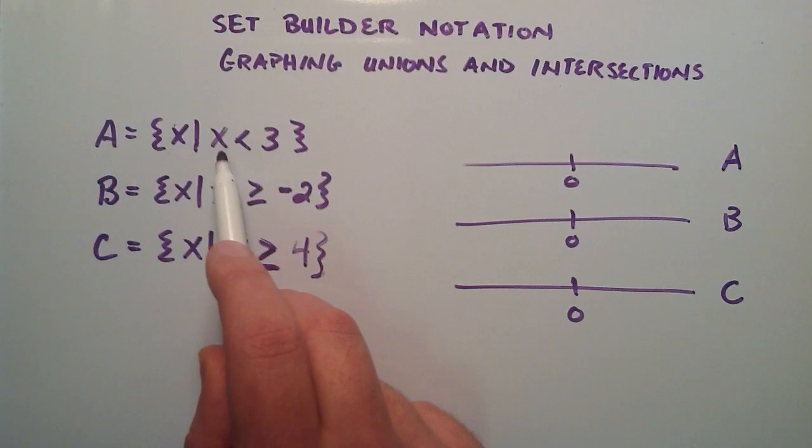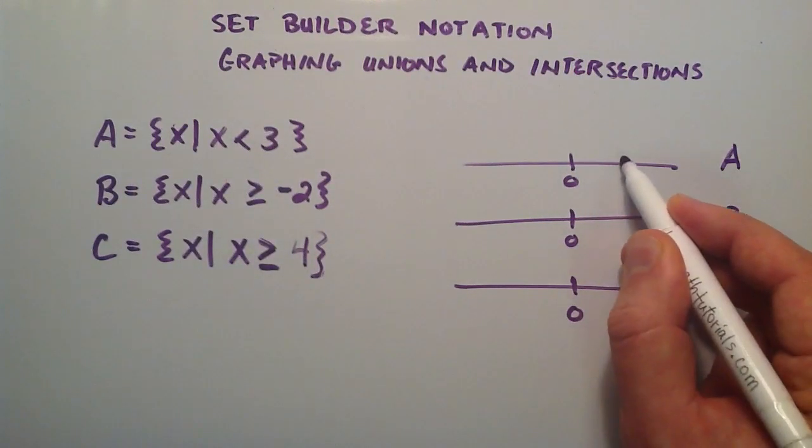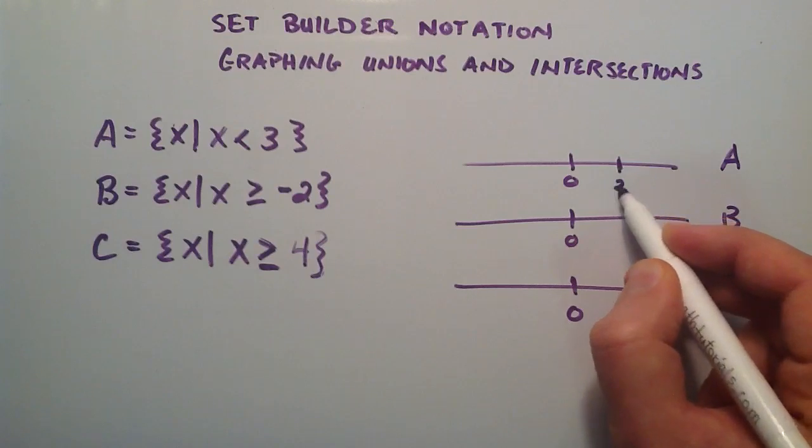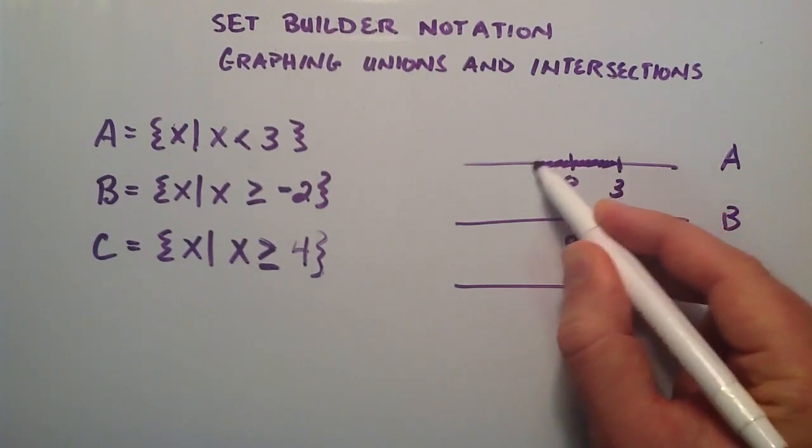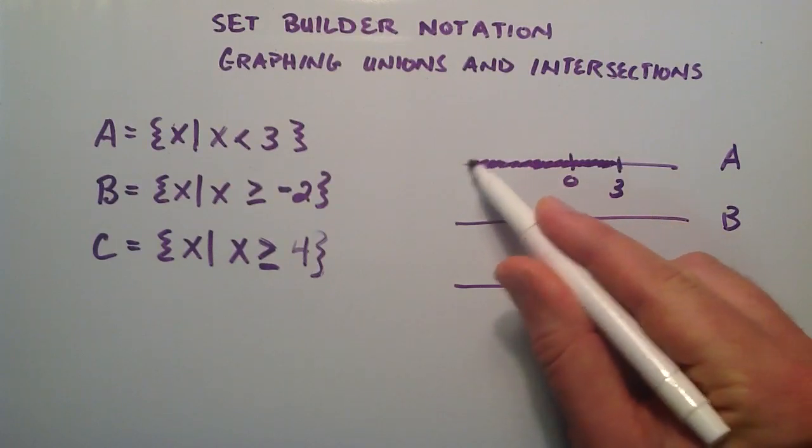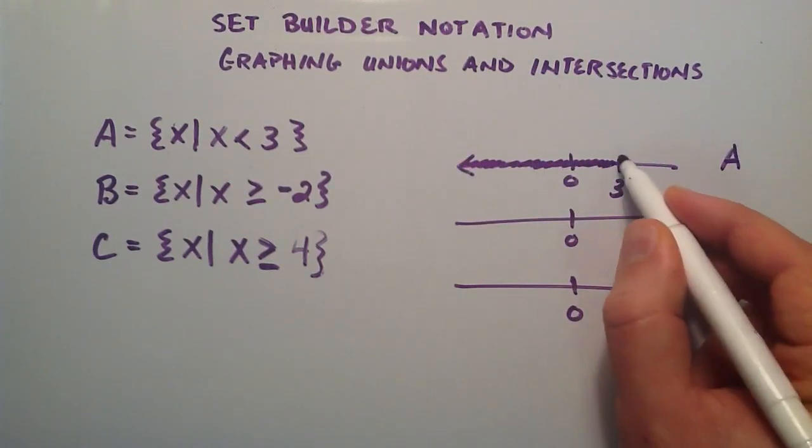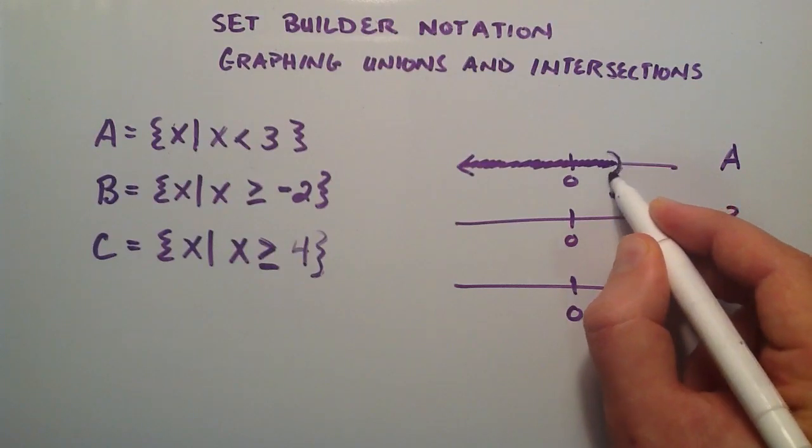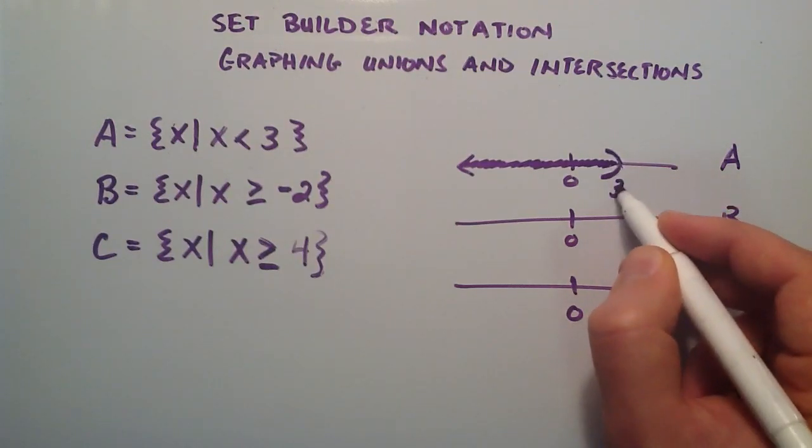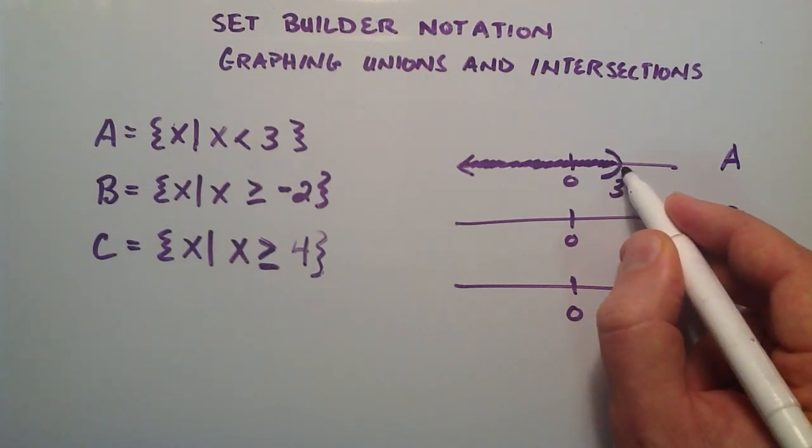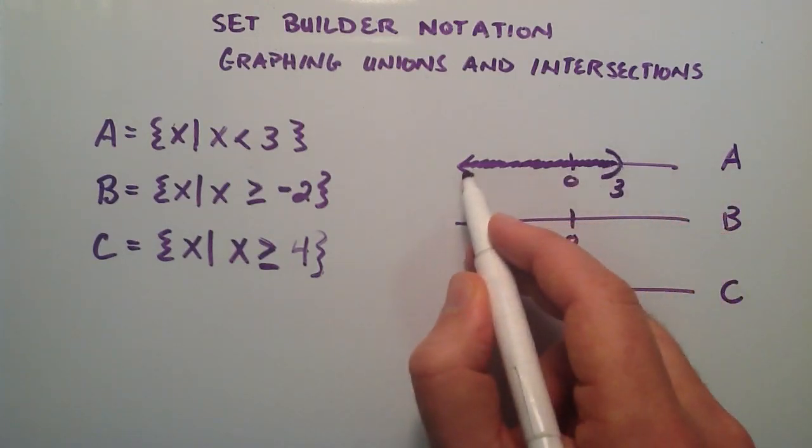So set A is all the elements that are less than the value 3. The value 3 is right about here, and all the values less than 3 are going to be shaded in here. We'll put a little arrow at the end to show that it keeps on going. We put our half circle here for the less than sign, which means that the number 3 is not included in our set.